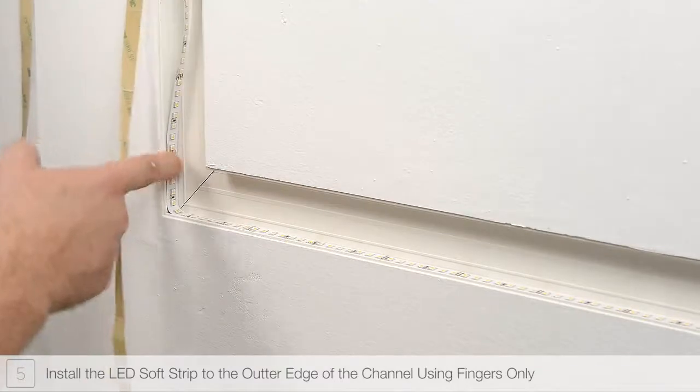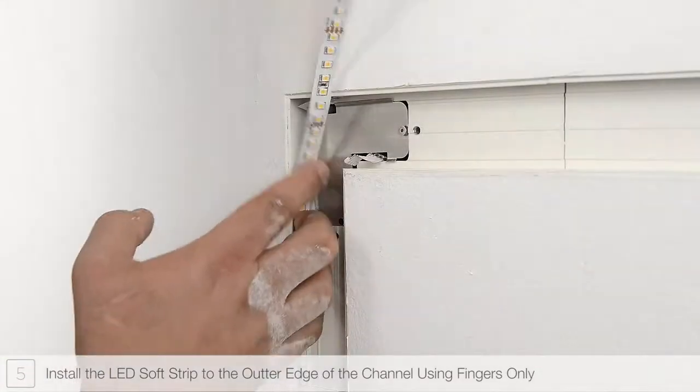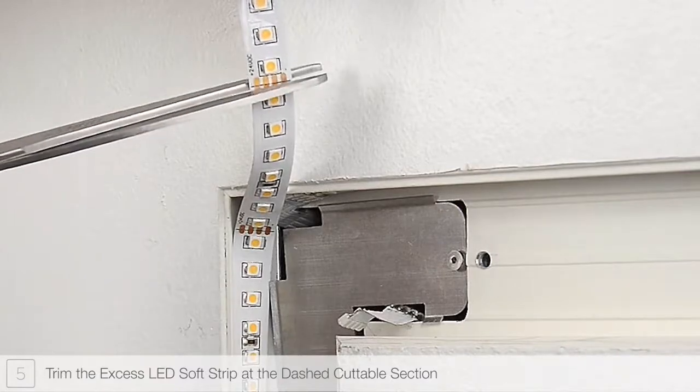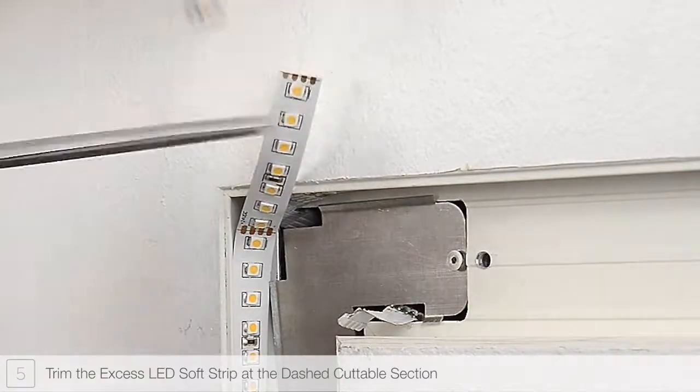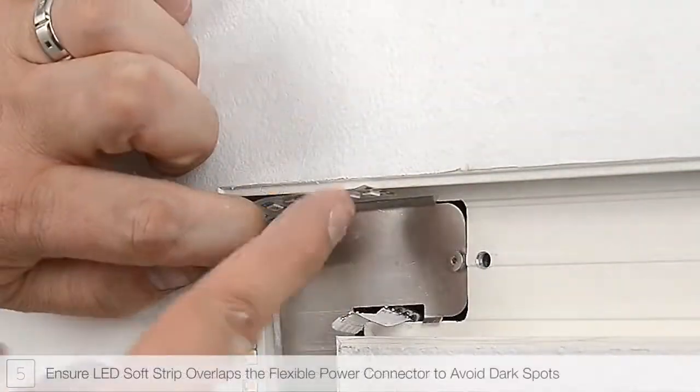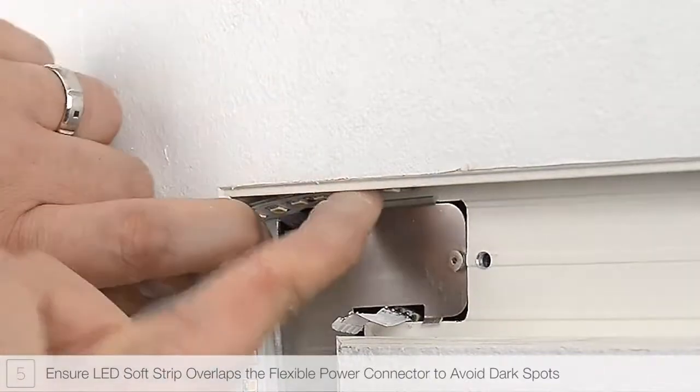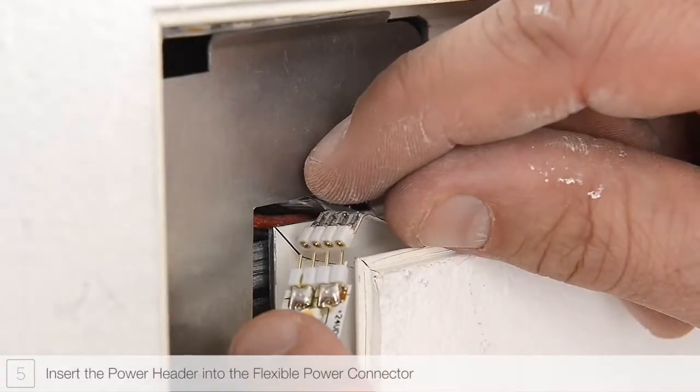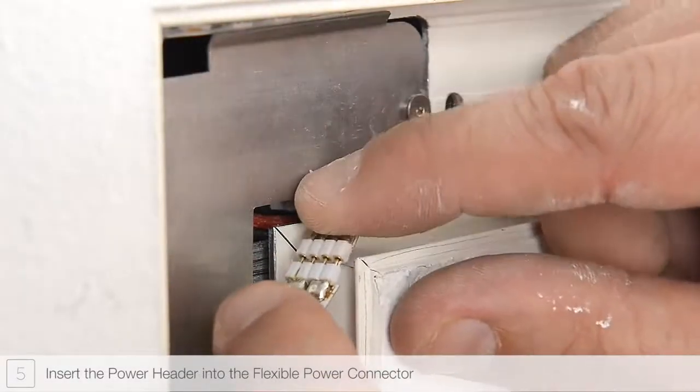Continue installing the soft strip wrapping around corners. Trim any excess soft strip along the dashed cutting lines. It is important to only trim the strip at these lines. Ensure LED strip overlaps the flexible power connector to avoid dark spots. Insert the power header into the flexible power connector.